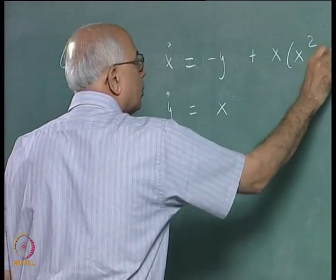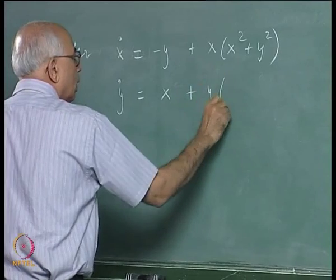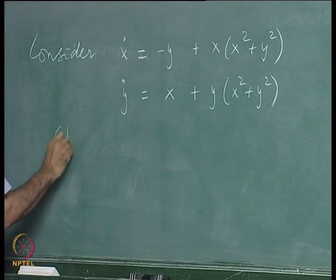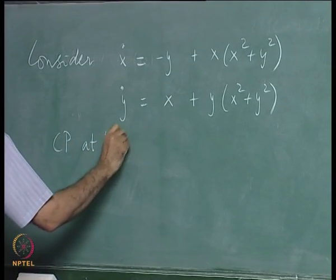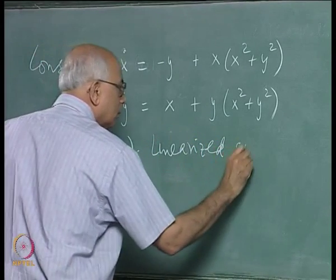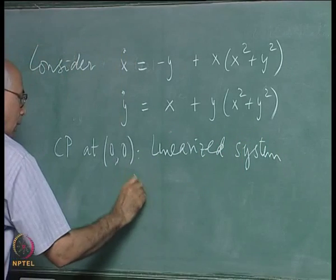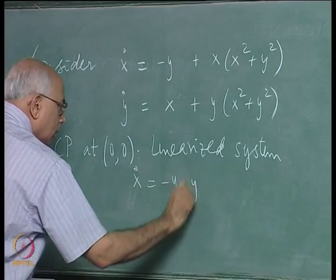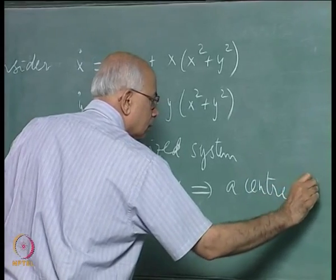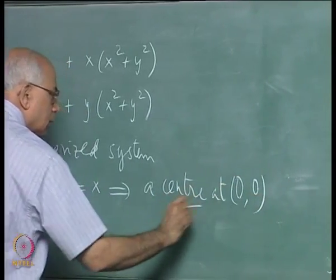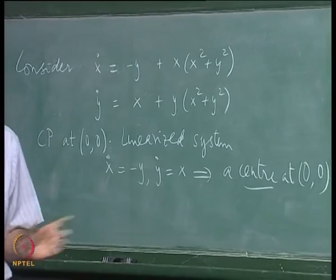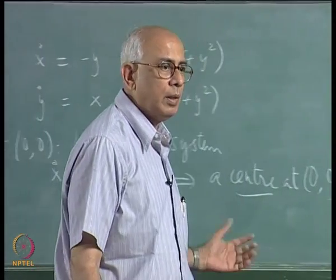Suppose I add x plus x times this plus y times x-squared plus y-squared. There is clearly a critical point at (0,0), and the linearized system x-dot equal to minus y, y-dot equal to x implies a center. You therefore expect the trajectories to go around in small circles or ellipses about the center, which is a stable critical point.